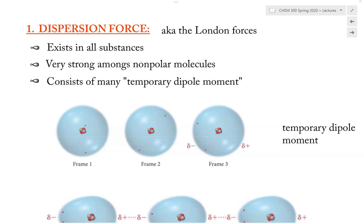In this lecture video, I will be discussing the first type of intermolecular force. In this case, it is the dispersion force, also known as the London forces or the London dispersion force. The dispersion force exists in all substances — all substances will be able to have this type of IMF. And this type of IMF is very strong among nonpolar molecules.